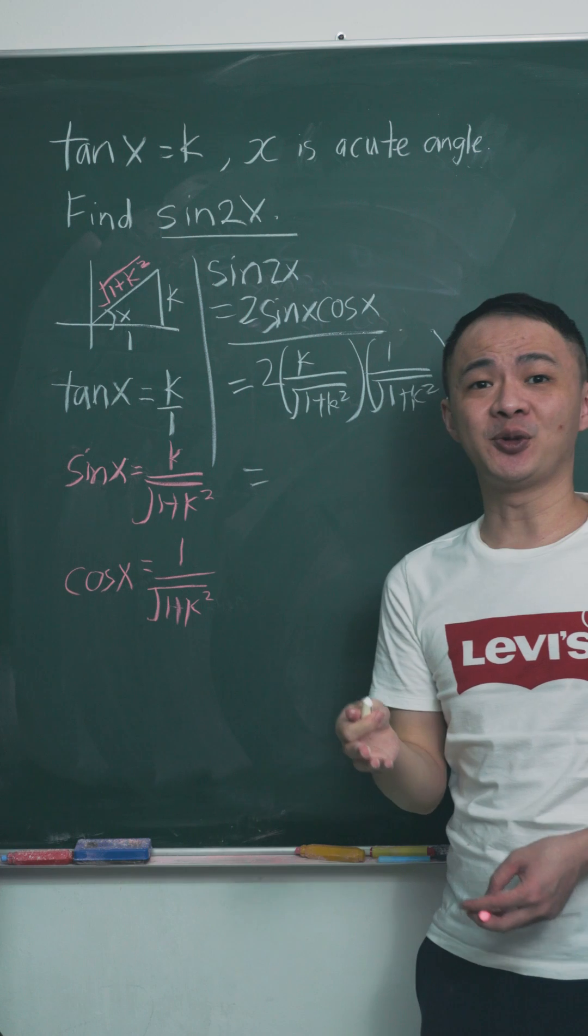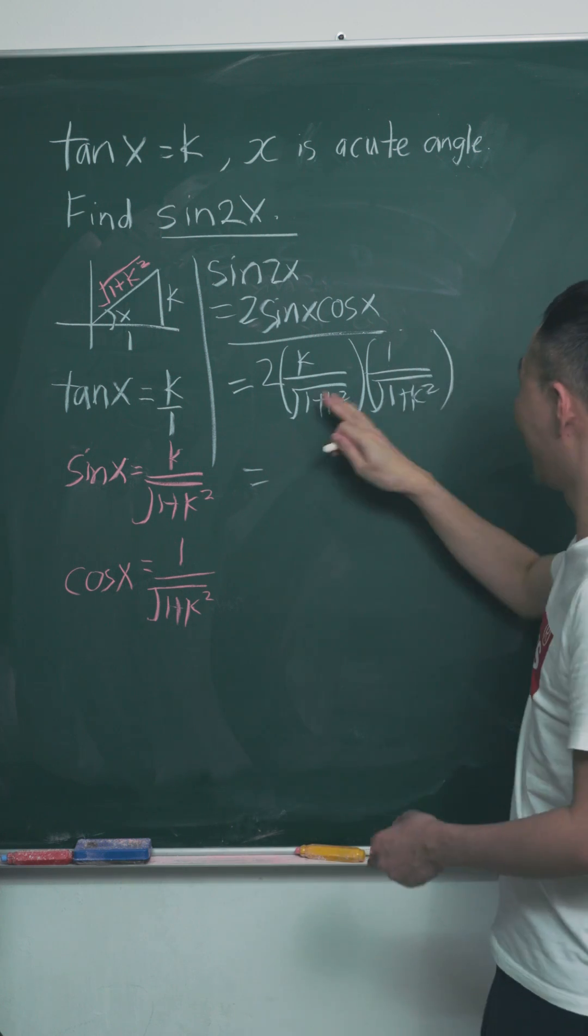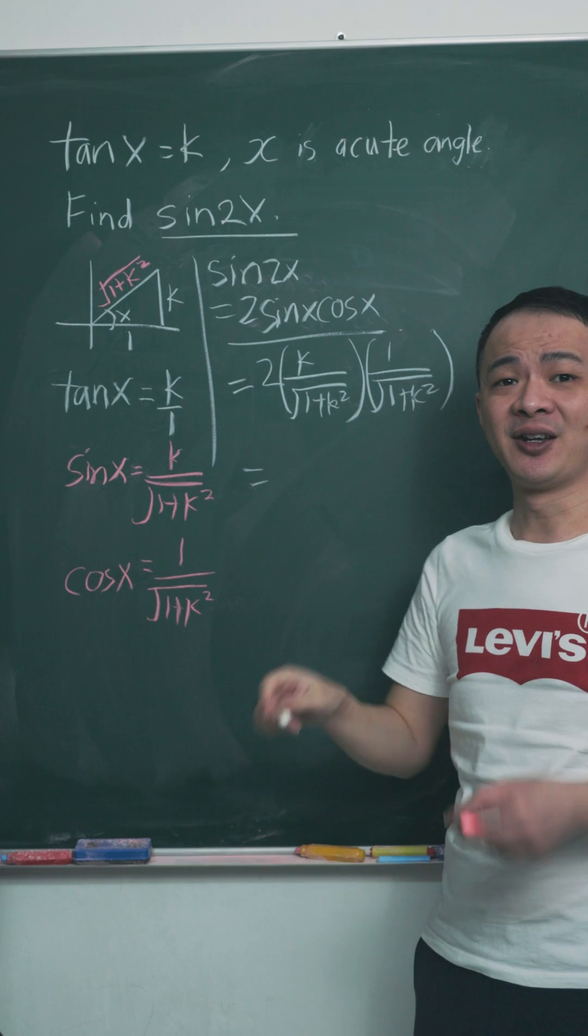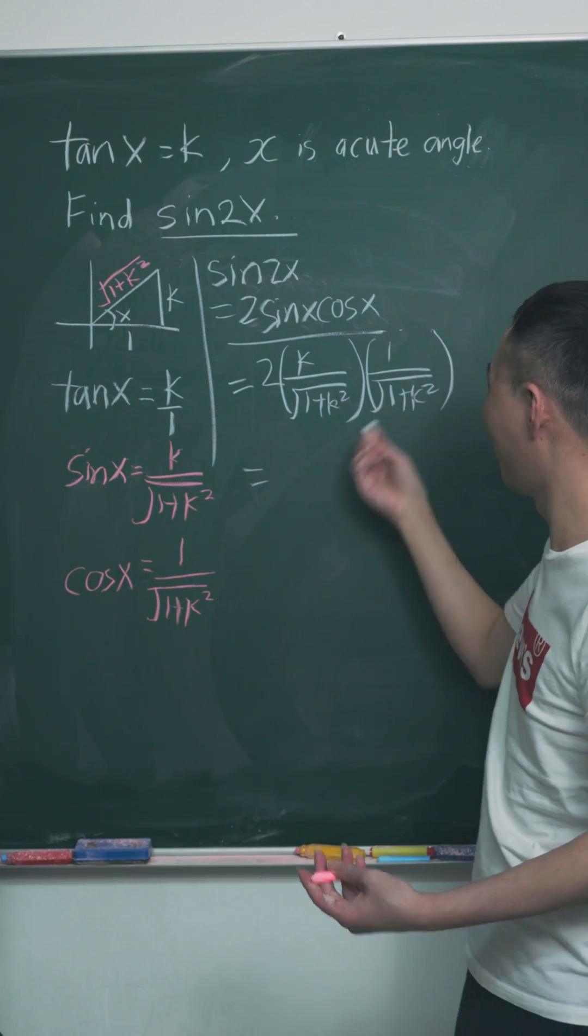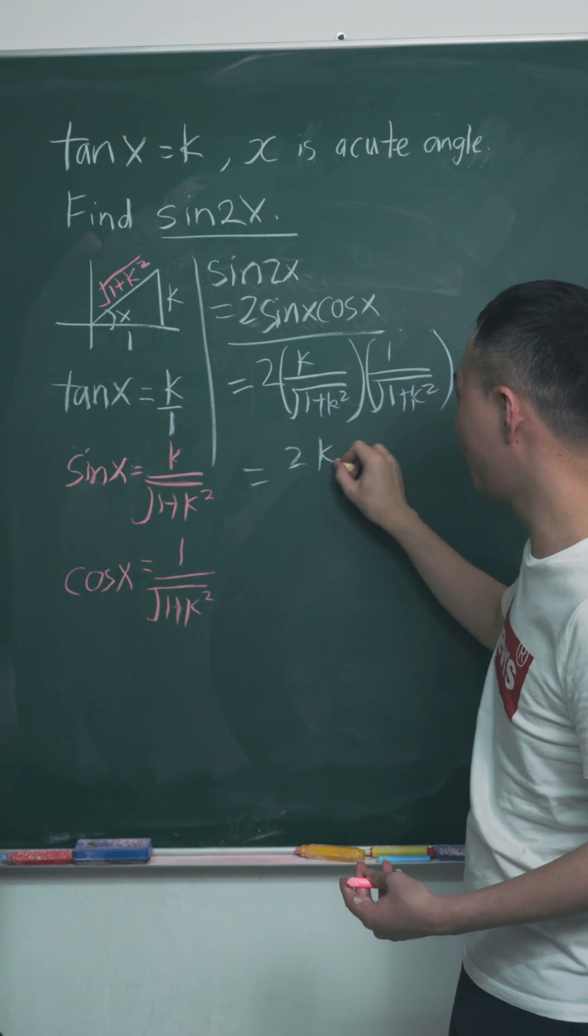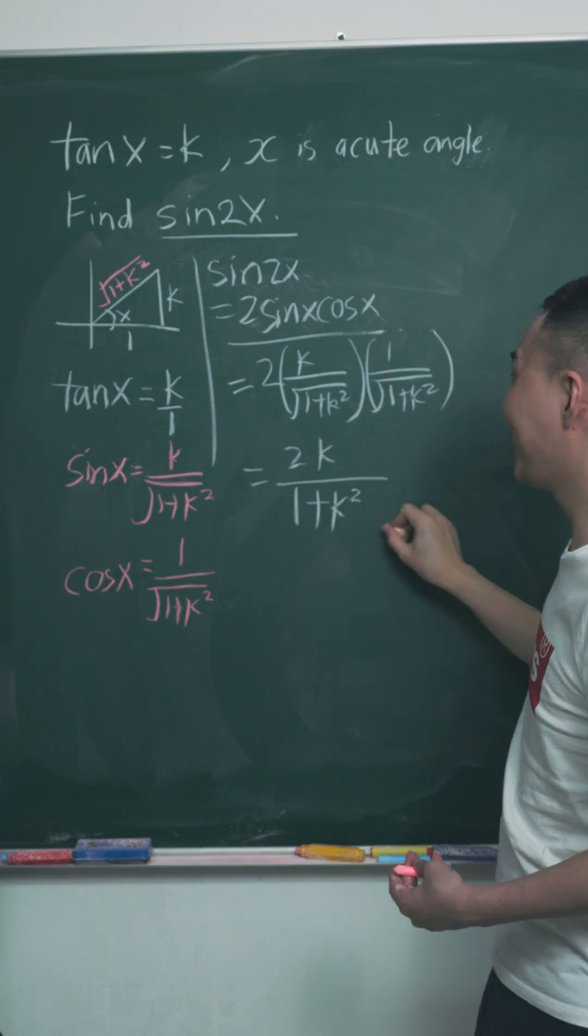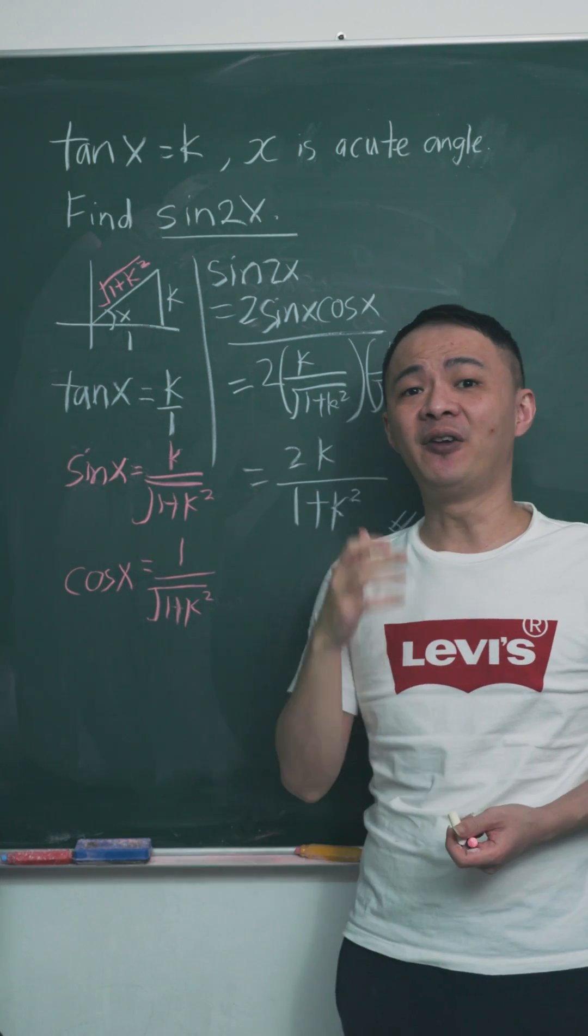Over here you just need to expand them. Then you should be able to get the perfect answer. Square root times square root will give you a square of the square root, which gets rid of the square root. So the final answer should be 2k over 1 plus k squared. This is how we solve this kind of tricky question.